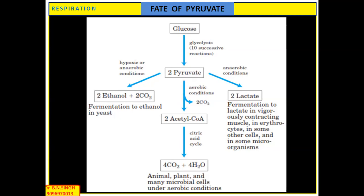In the case of muscles, when oxygen deficiency is present during strenuous exercise, pyruvic acid is converted into two lactic acid molecules without forming carbon dioxide. This reaction occurs in muscles as well. This is the fate of pyruvic acid after glycolysis — it follows either aerobic respiration, alcohol fermentation, or lactic acid fermentation.